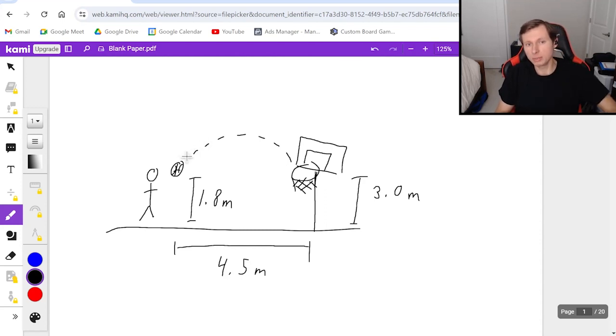And what I want to be solving for is what velocity do I need to shoot this basketball at in order to make the shot. And let's assume I'm shooting at a 60 degree angle. So in other words, if I were to draw that right here, this angle right here is 60 degrees. So how would we solve for velocity?